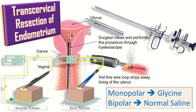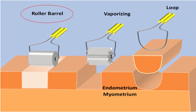The advantage of the bipolar medium is that there is no risk of glycine overload or trans-urethral resection syndrome. However, the disadvantage is that water can mix with blood during the procedure and obscure surgical visibility. TCRE also has the longest learning curve and highest complication rates.